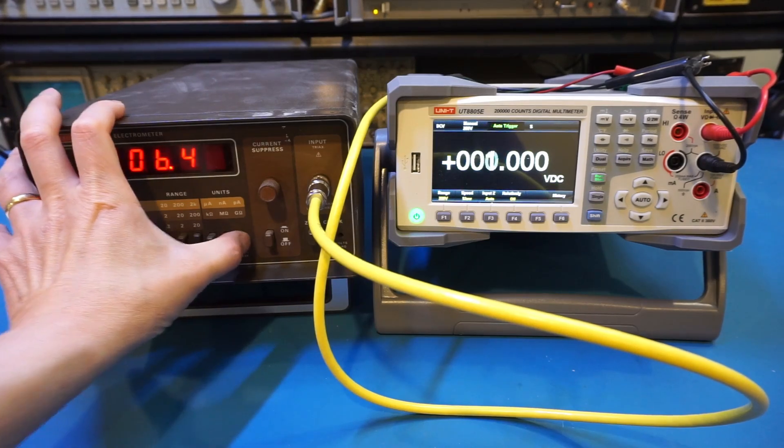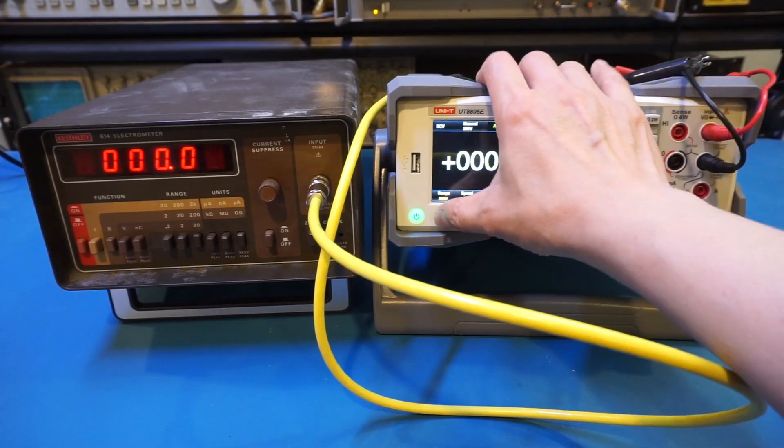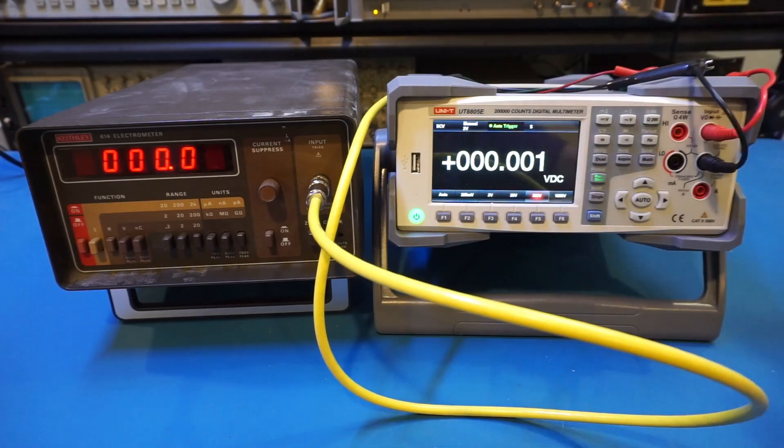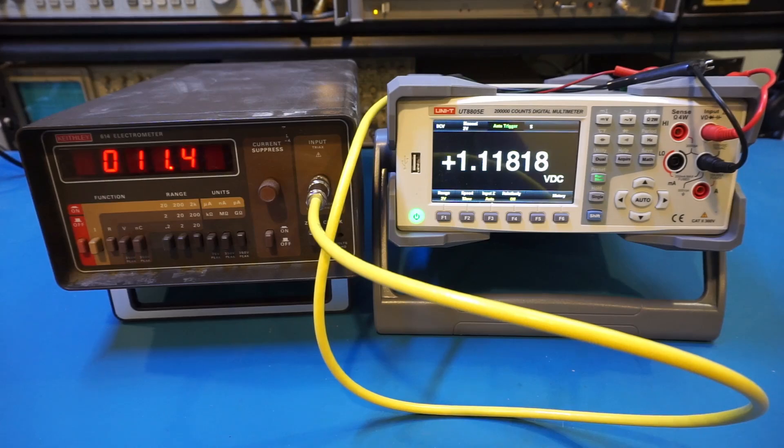So let's go back to the 20 gigaohms. And let's change the range back to 2 volts. Again, when the reading stabilizes, you can see that we are getting that greater than 10 gigaohms input impedance.